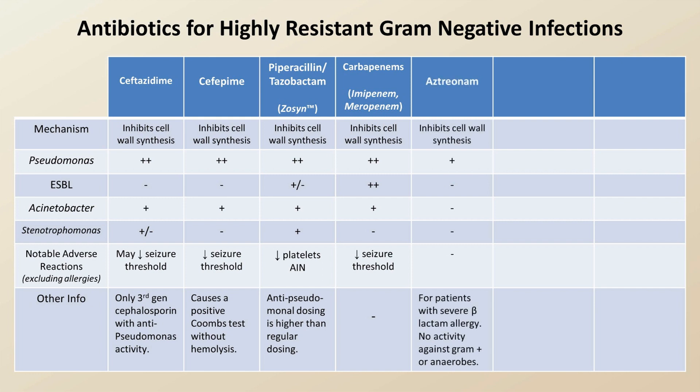Aztreonam only really covers Pseudomonas among these four, although it's usually reserved for patients with a severe beta-lactam allergy, as there is generally no cross-reactivity. However, it should not be used in patients who have had a severe allergic reaction to ceftazidime, as the two share a side chain and thus a theoretical risk of cross-reactivity. Aztreonam has no activity against gram-positives or anaerobes.